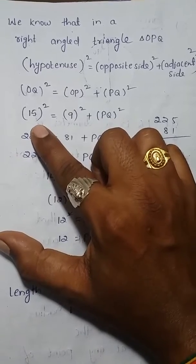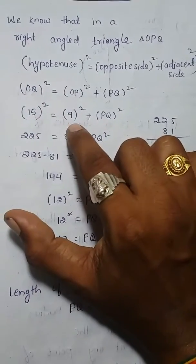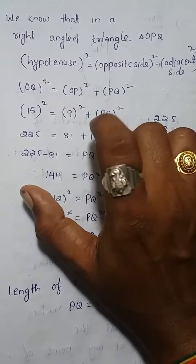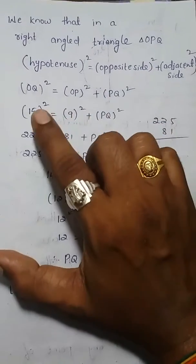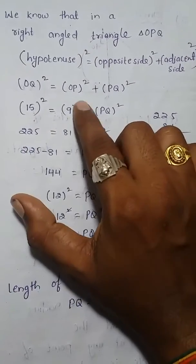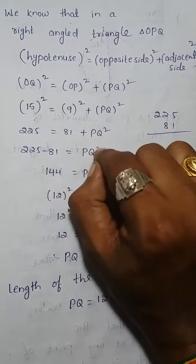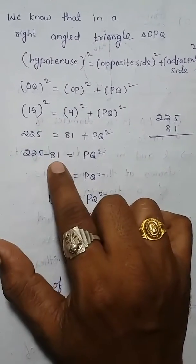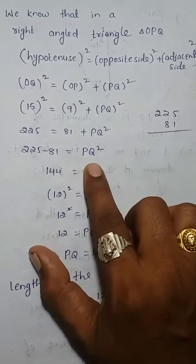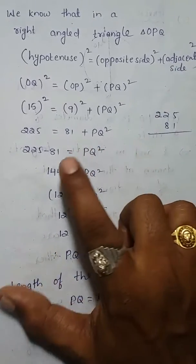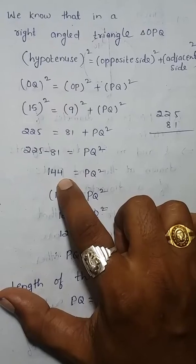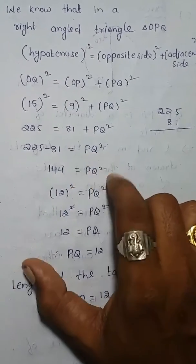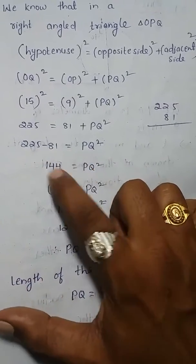OQ is 15 centimeters, so 15 squared equals OP squared (9 centimeters) plus PQ squared. That gives 225 equals 81 plus PQ squared. Transposing 81 to the left side: 225 minus 81 equals PQ squared, so 144 equals PQ squared.